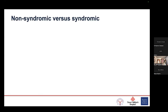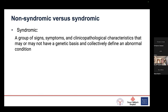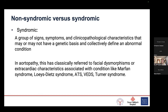I want to talk about non-syndromic versus syndromic HTAD. When people talk about syndromic HTAD, they're talking about a group of signs, symptoms, and imaging characteristics that may or may not have a genetic basis. Syndromic features include the facial phenotype seen in Marfan syndrome, Loeys-Dietz, arterial tortuosity syndrome, VEDS, and Turner syndrome. However, there's a lot of overlap, and especially in children, this distinction is much harder to make — we need to be very careful about it.